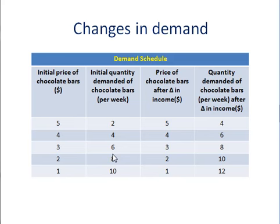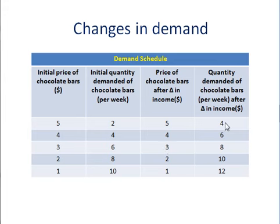And so, it fundamentally changes the demand curve — in fact, it causes a situation where we have to create a new demand curve. Let's take, for example, this situation. This is my initial price of chocolate and the initial quantity of chocolate. Now, let's assume that I increase people's incomes in whatever local community this is. What that means is that at the same price of chocolate bars as before, people are going to be willing and able to purchase more. So, at a price of five, instead of wanting two, now they want four chocolate bars. At a price of four, instead of wanting four, they want six, and so forth.